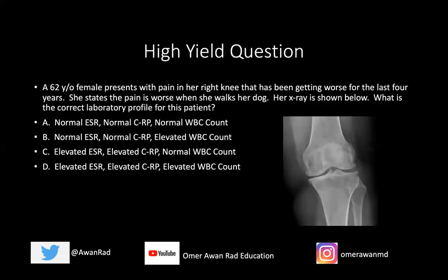So let's come back to this question. This is a 62-year-old female that presents with pain in her right knee that has been getting worse for the last four years. She states the pain is worse when she walks her dog. Her x-ray is shown below. What is the correct laboratory profile for this patient? First of all, it's an older female, so that's a risk factor for osteoarthritis. The pain gets worse when she walks her dog — so with activity. That's a red flag for osteoarthritis on the USMLE — pain with activity. It's chronic — she's been having this pain for four years.